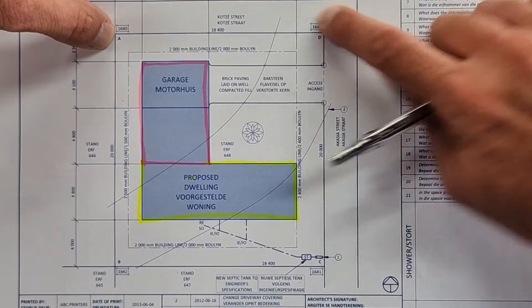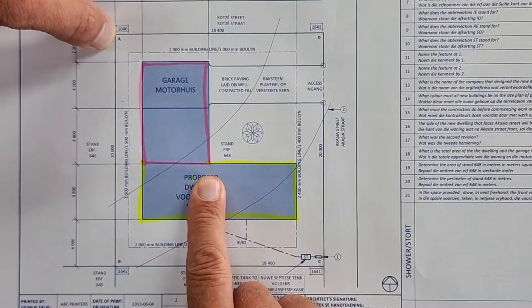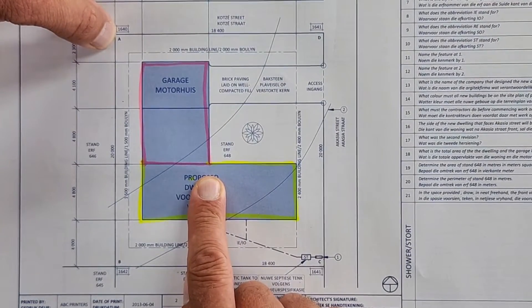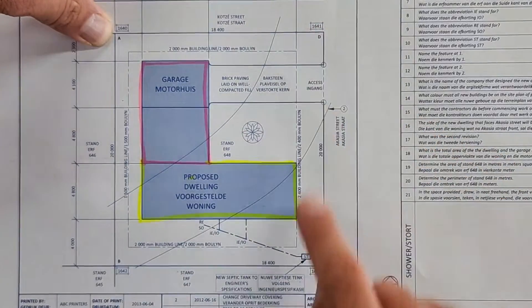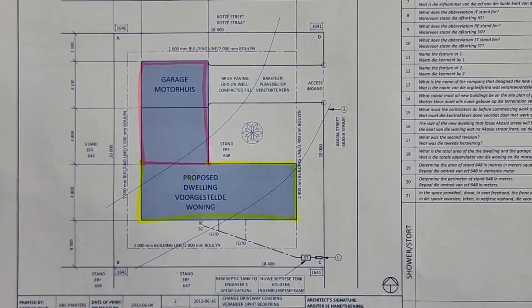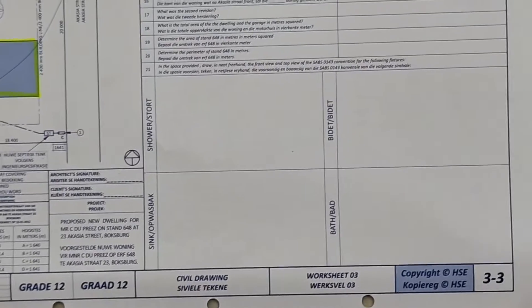Number 20, determine the perimeter of stand 648. People these are straightforward. Take the time and make sure you get them right. What I want to get to is this question that is a new one.